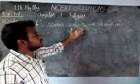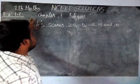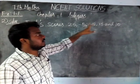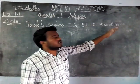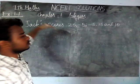Now we are going to check it. Jack's scores are given on 5 rounds: 25, minus 5, minus 10, 15, and 10. These are the marks Jack scores.